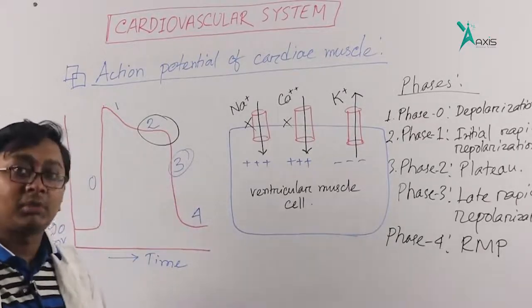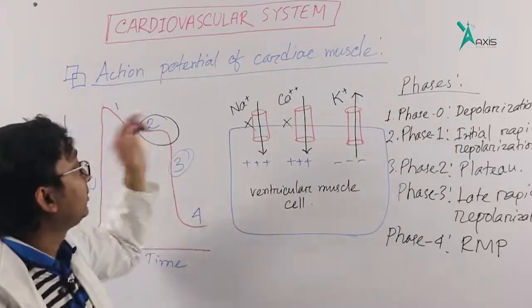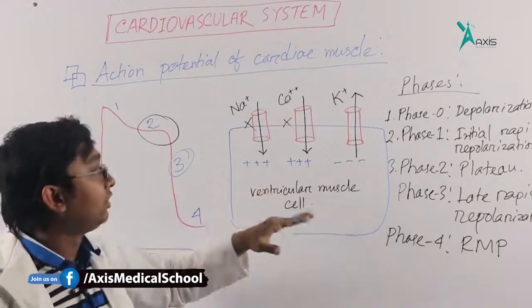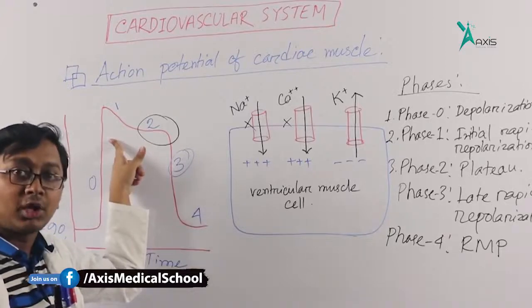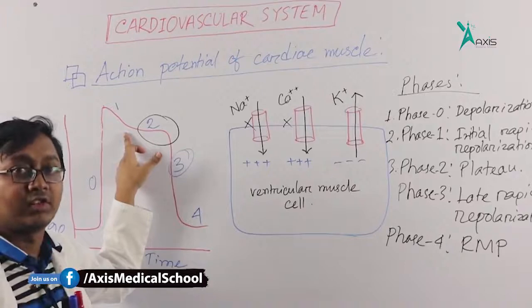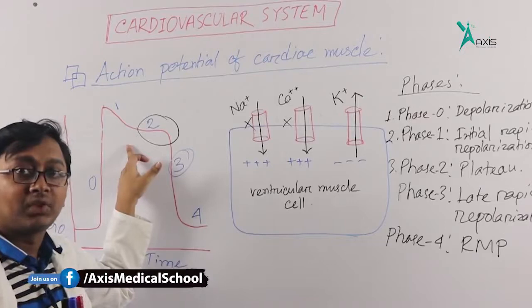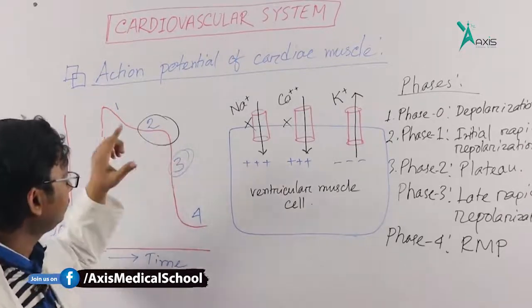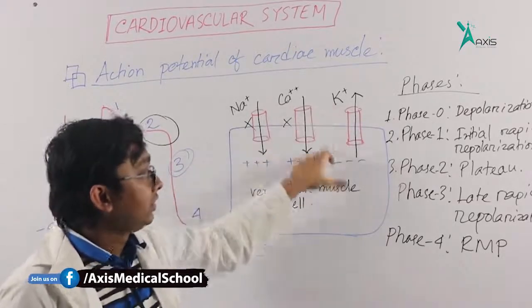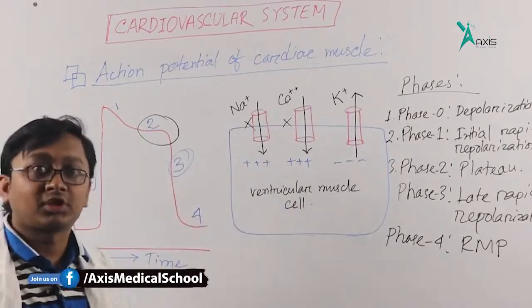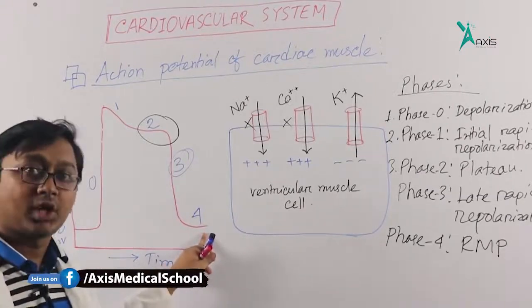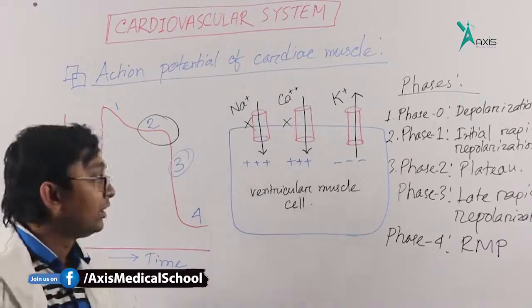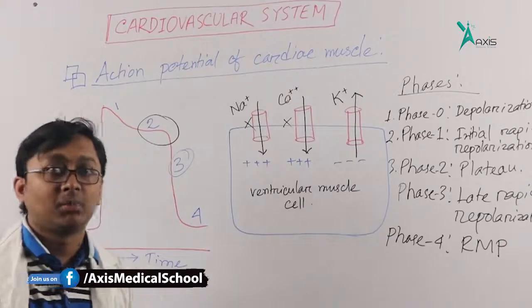Let's summarize the phases. Phase 0 is due to influx of sodium, that is depolarization. Phase 1 is when sodium channels close, giving initial rapid repolarization. Then calcium channels open causing calcium influx, giving us a plateau phase which is characteristic of cardiac muscle only. Phase 3 is when calcium closes and only potassium channels are open, causing late rapid repolarization. Then we reach resting membrane potential. Now another important concept is the refractory period.